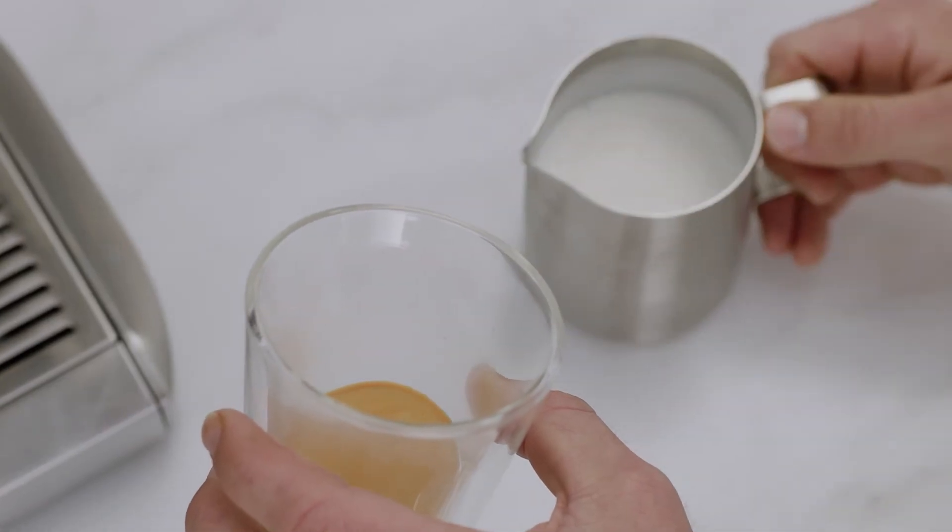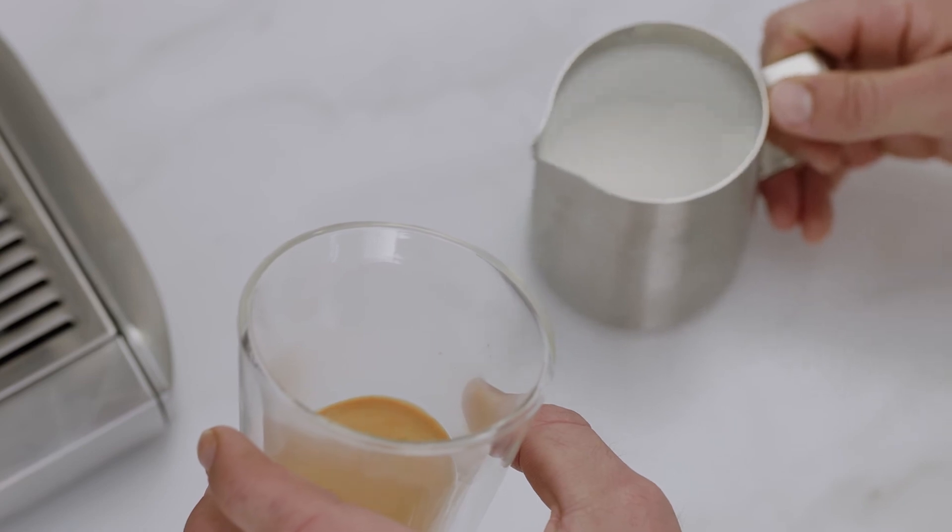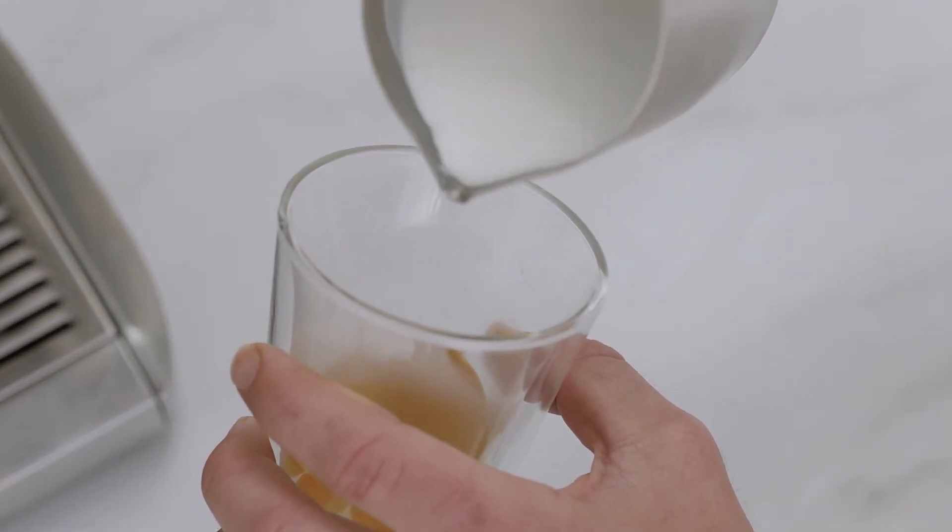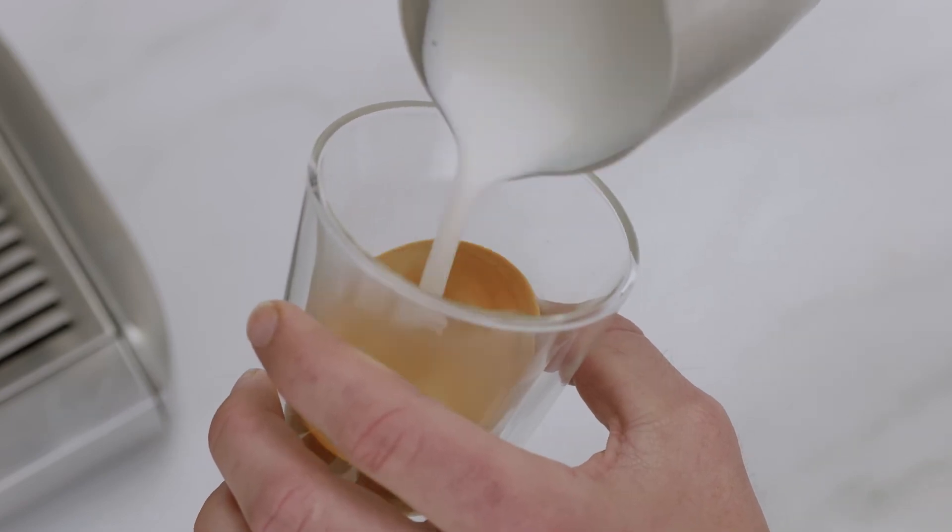Strike the jug down firmly on your countertop to collapse any large bubbles. Then, swirl the jug to integrate the texture before pouring directly into your freshly extracted espresso.